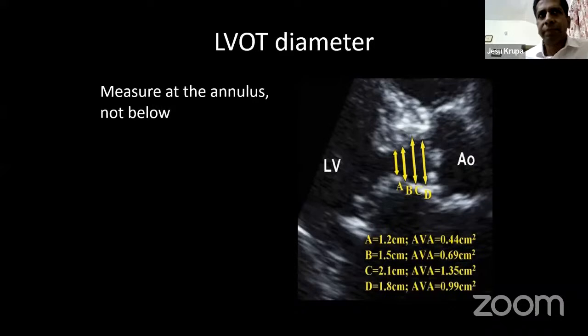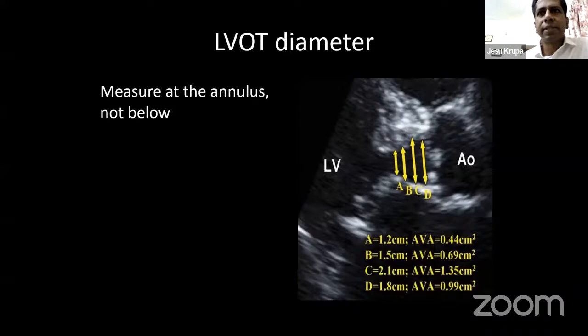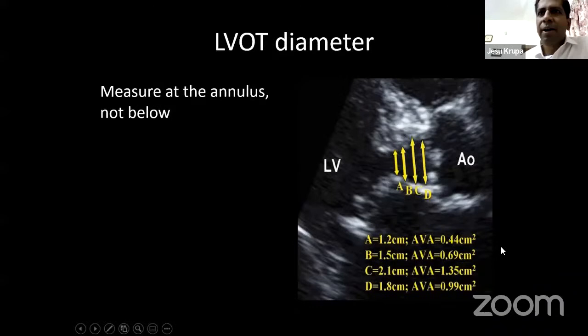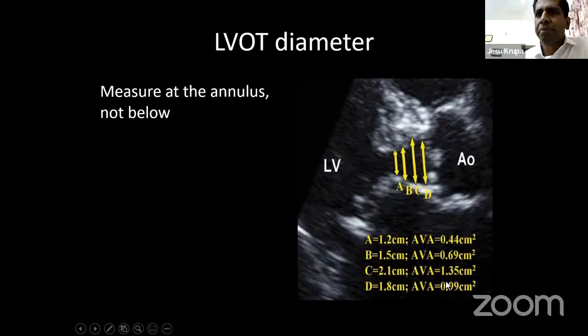This brings up a very important point about integrity in measurements. Knowing how to measure is one thing; knowing that measurements have consequences is another. In the LVOT, if you are off by only a millimeter, because you use pi r squared, every millimeter error gets squared. For example, in a given patient with aortic stenosis, depending on where you measure, the aortic valve area can range from 0.44 to 1.35 — illustrating how much difference incorrect measurements can make.